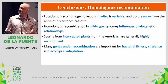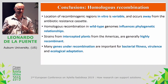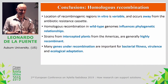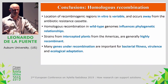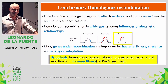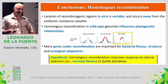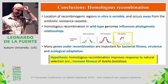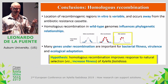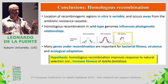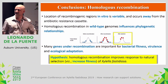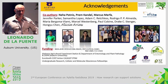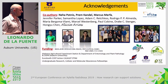In conclusions: the location of recombinogenic regions in vitro is very variable and occurs away from the selected cassette. In wild-type Xylella strains, recombination influences phylogeny. Intercepted strains seem highly recombinant, and many recombinant genes are important for bacterial fitness, virulence, and ecological adaptation. Our hypothesis is that homologous recombination improves the response to natural selection, increasing the fitness of Xylella fastidiosa. All isolates we sequence are taken from symptomatic plants — meaning we are sampling bacteria that had already adapted or climbed the hurdle of establishing in a new host. The genes we identify are likely important for the ecology of Xylella. Thank you for the funding sources and the invitation.